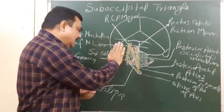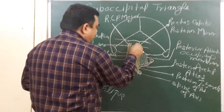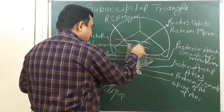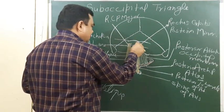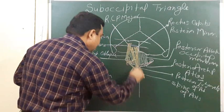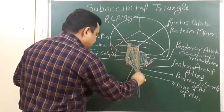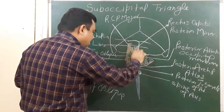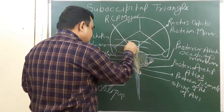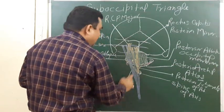The roof is formed by muscles which cover all these structures. Here one muscle is attached — this is semispinalis capitis. This muscle lies over this region. Another muscle is longissimus capitis. These two muscles — semispinalis capitis and longissimus capitis — form the roof of this triangle.